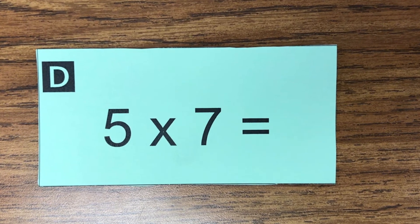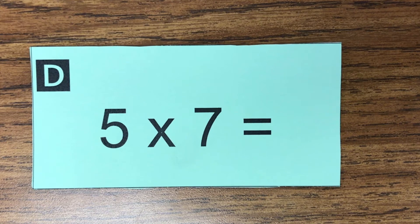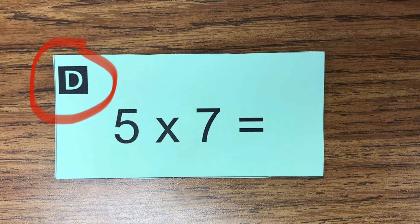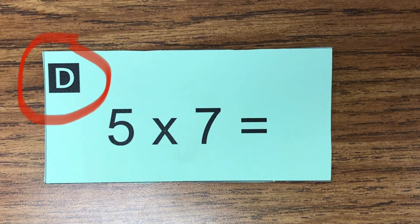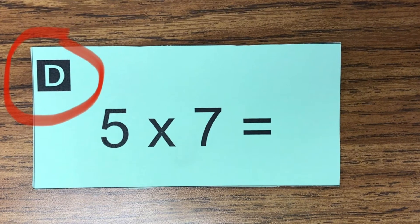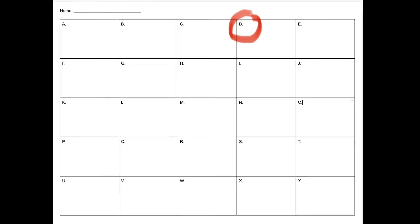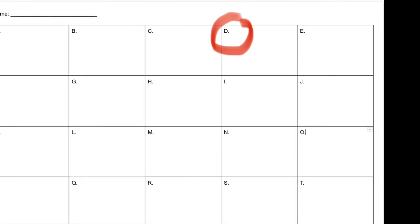Everyone will start at their own desk. So if your desk has the letter D on it and the problem is 5 times 7, you will solve 5 times 7, which is 35, and you'll put it on the answer sheet in the box where the D is.